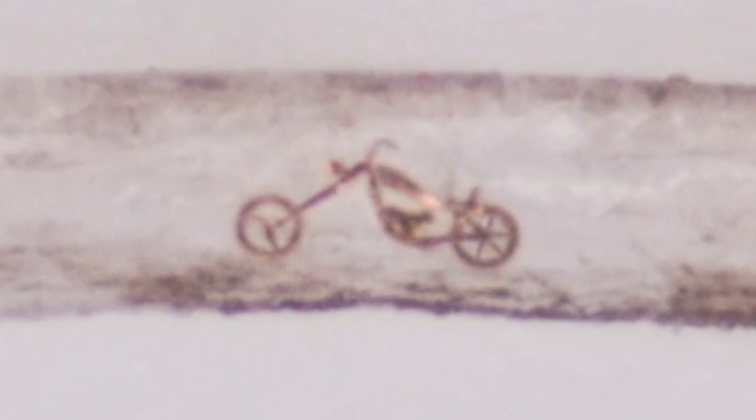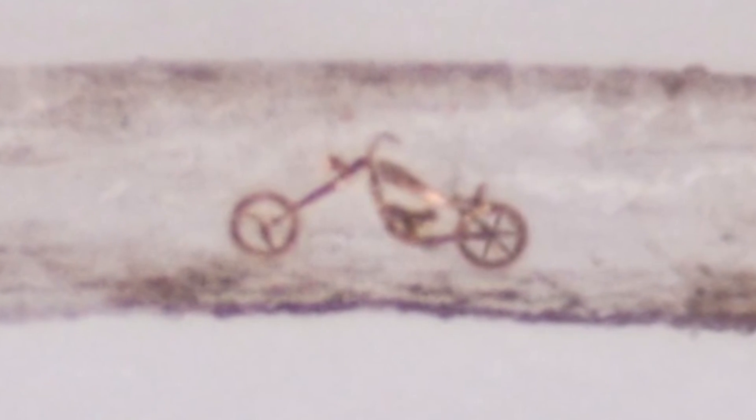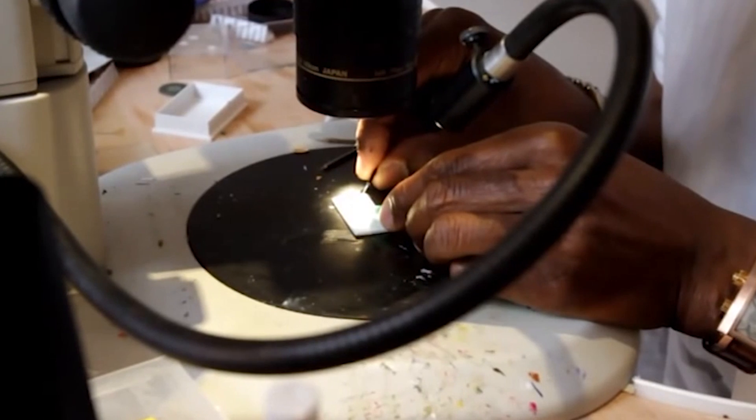In fact, the very smallest sculpture he has made is of a motorcycle inside a hollowed out shaft of Willard's own beard stubble. And don't forget, these are made by hand, not by computer or robot or 3D printer, but all by hand.